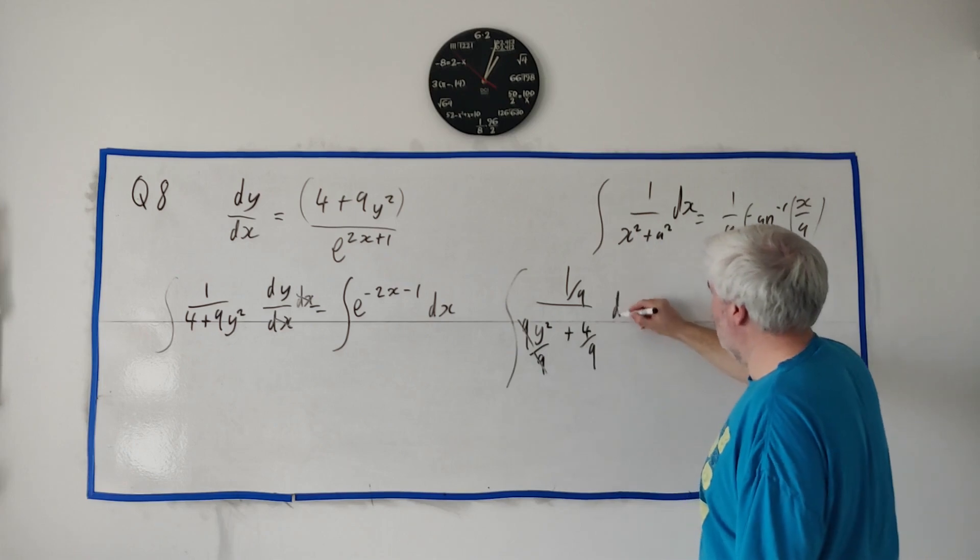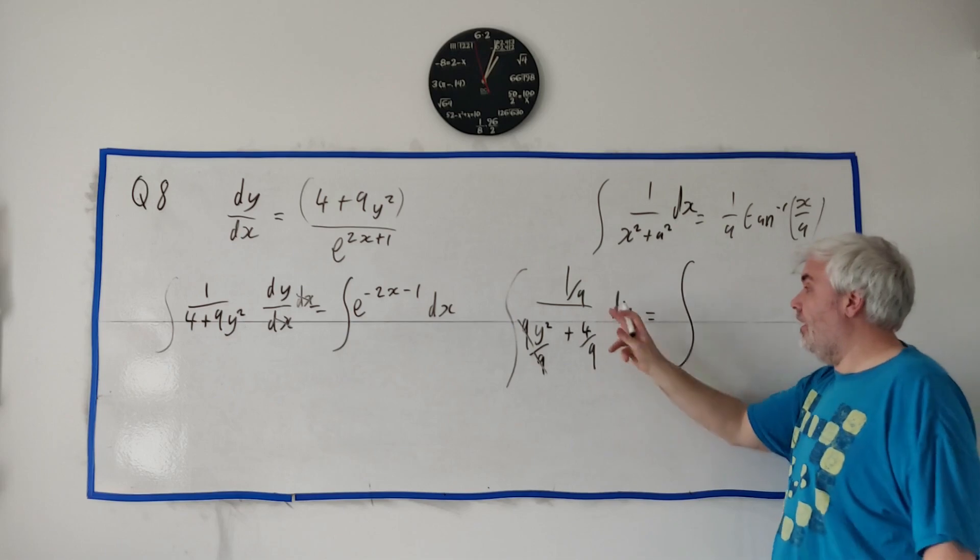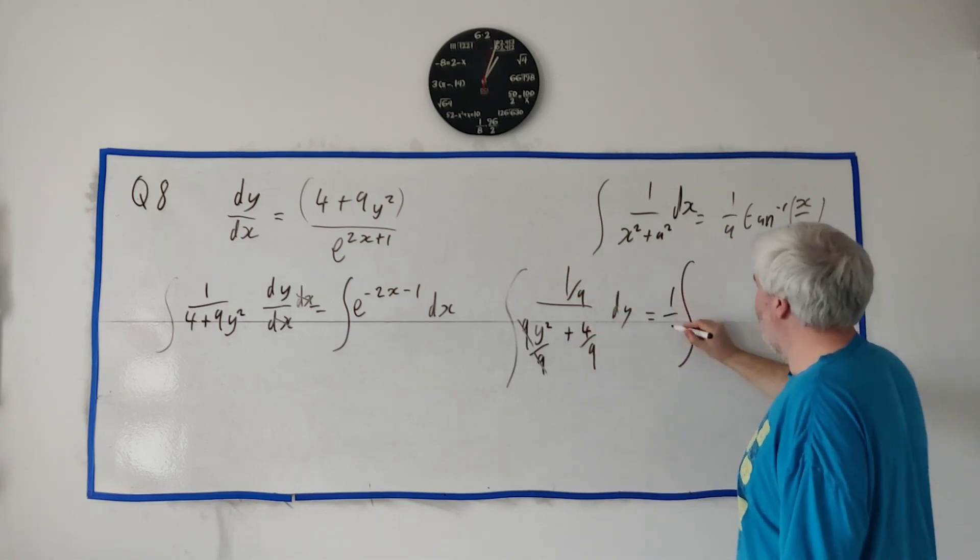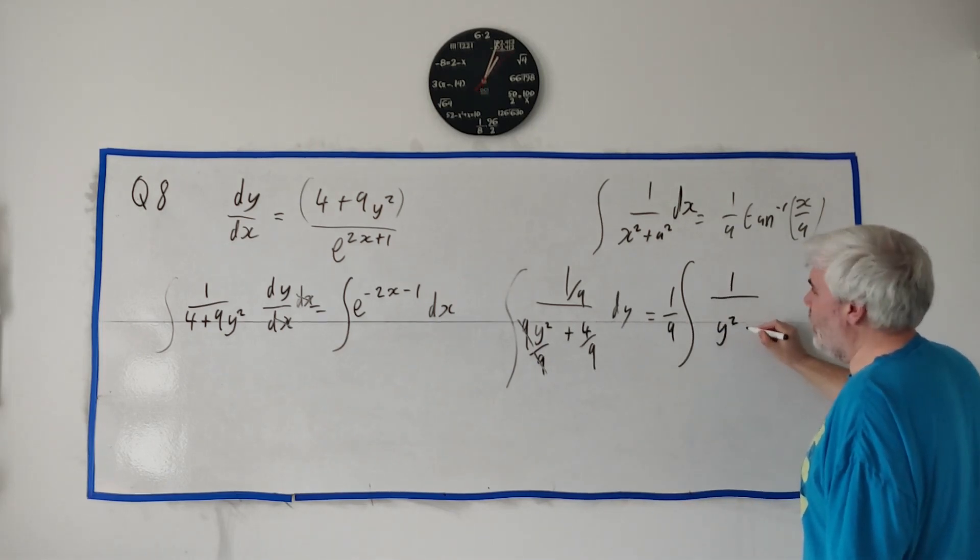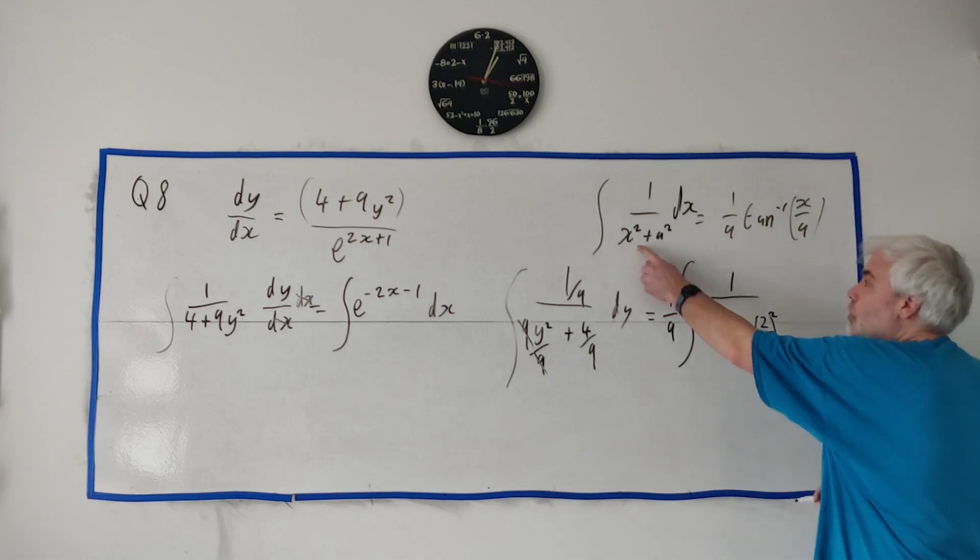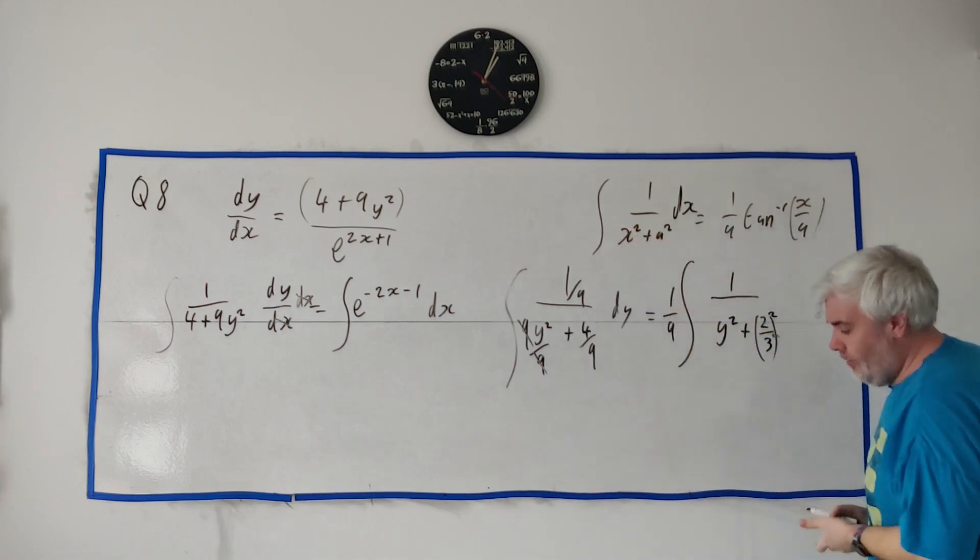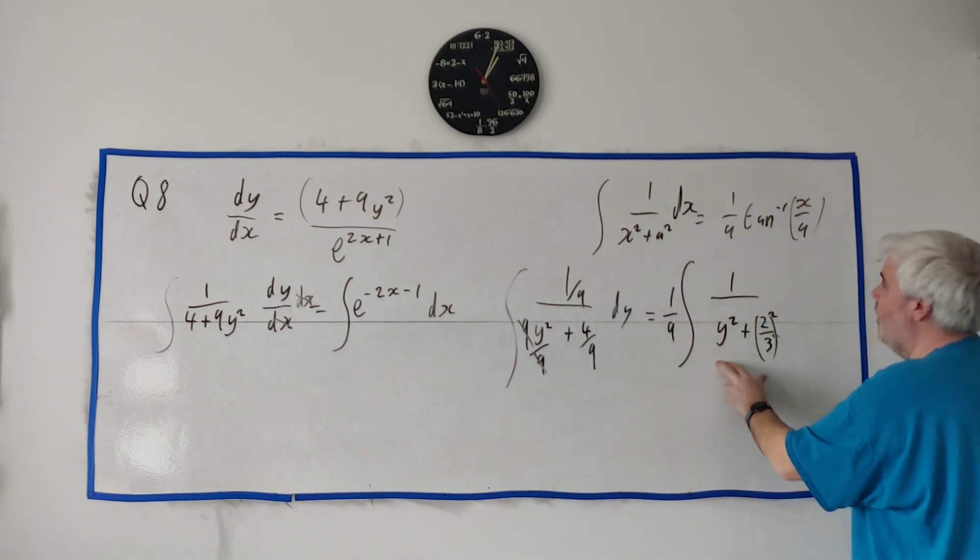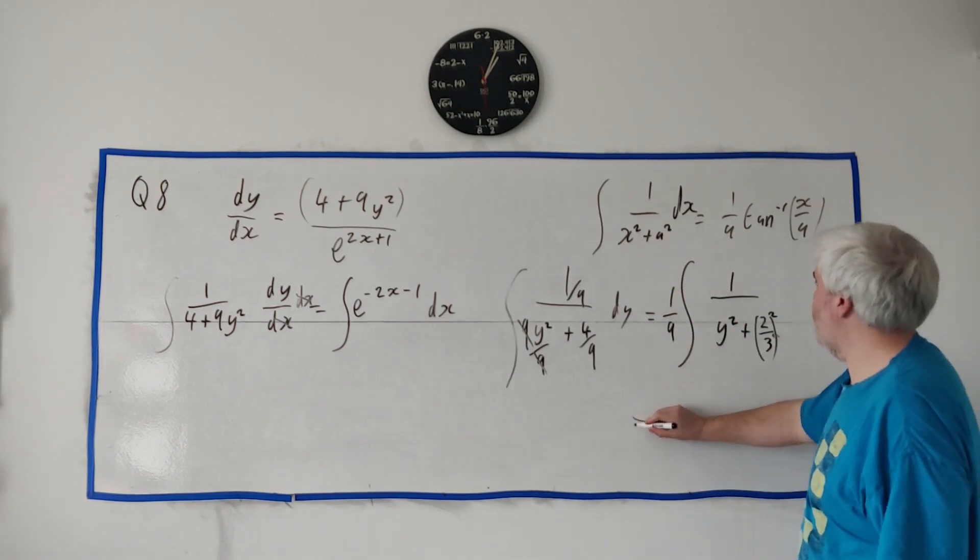But now I'm left with, and this is the integral, dy. That's equal to, let's see, 1/9 has no y's in it. It's multiplying everything. It can move all the way out front. On the bottom, then, we're left with 1 over y² + 2²/3², or let's say (2/3)². Now it looks just like this. We have the variable we're dealing with, x² in this case, y². We have something squared, 2/3 squared. And I know all of this is equal to 1/9 is out front, we'll deal with that later.